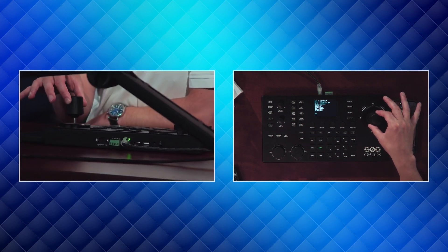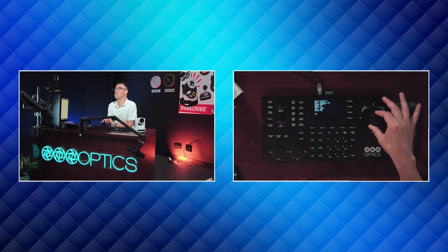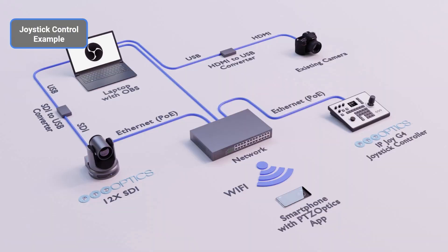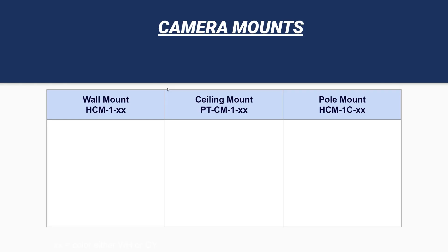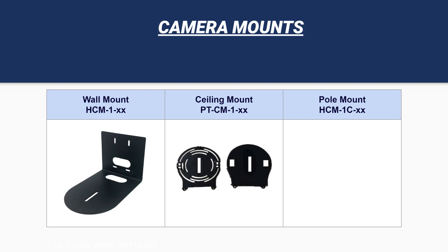Here's a quick connection diagram: the camera is connected to a network switch, alongside a laptop or live streaming computer. You can even use Wi-Fi to control the camera with a smartphone, plus a joystick. There are tons of examples of setups like this on our website. For mounting, you can mount the camera to the wall, the ceiling, or a pole — ceiling mounts and wall mounts are really popular.